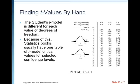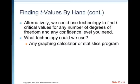The Student's t model is different for each value of degrees of freedom. Because of this, statistics books usually have one table of t model critical values for selected confidence levels — that's our Table T. Alternatively, we could use technology to find t critical values for any number of degrees of freedom and any confidence level. So what technology could we use? Any graphing calculator or statistics program.